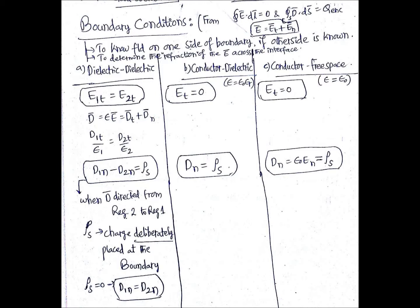Similar to these conditions, you can derive the conditions for E and D for the other boundaries — conductor-dielectric and conductor-free space. In the case of a conductor-dielectric boundary, the tangential component of E equals 0, and the normal component of D equals ρs.